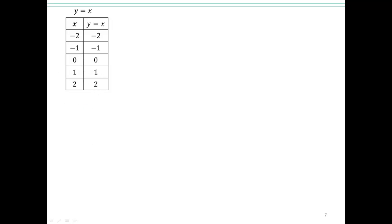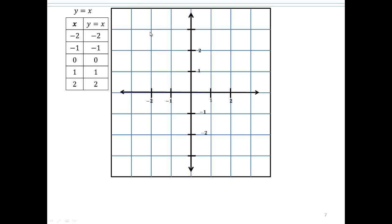You can plot lots of other points. Let's put our coordinate axis here and plot the points. We have negative 2, negative 2. Remember, x is the first coordinate, y is the second coordinate. Negative 1, negative 1. Zero, zero. One, one. And two, two.